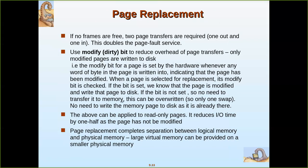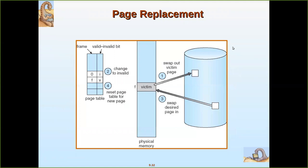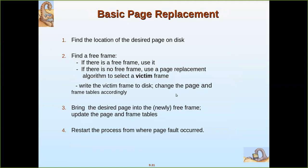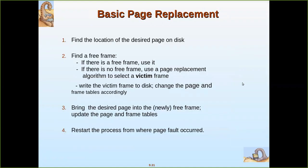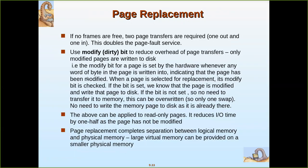If no frames are free, two page transfers are required. When there is no free frame, the victim page will be swapped out and the new page will be swapped in. So there are two transfers - one swap out and another swap in. This doubles the page fault overhead because two IO operations are required, which doubles the disk query.